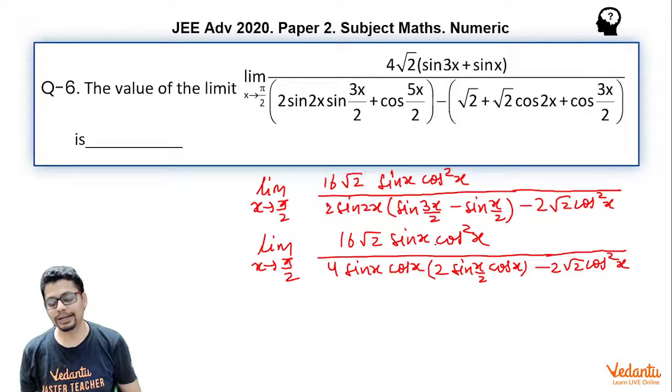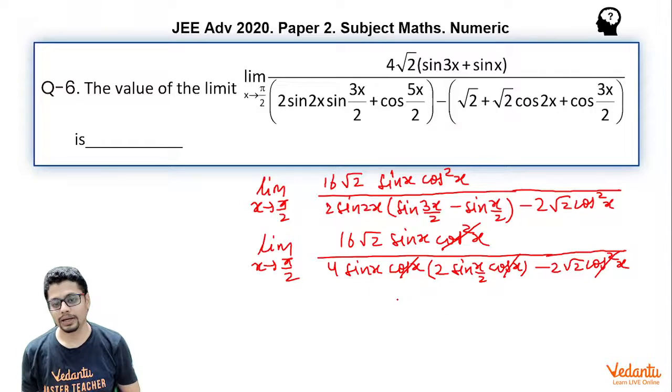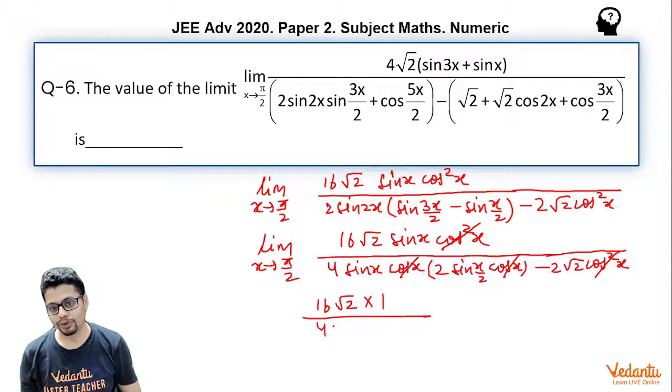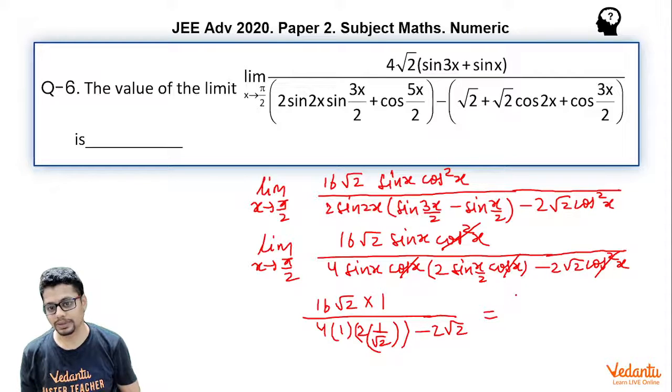Now you can cancel cos² x from numerator and denominator. And now as you put limit x tending to π/2, it becomes 16√2 multiplied by 1 divided by 4 multiplied by 1, 2 times multiplied by 1/√2 minus 2√2 which is 2√2.